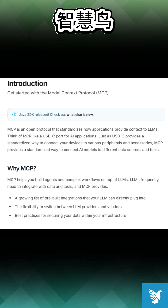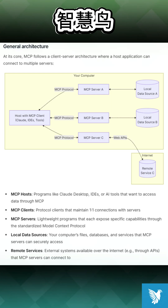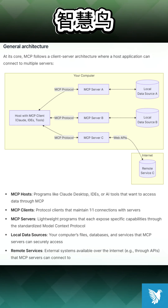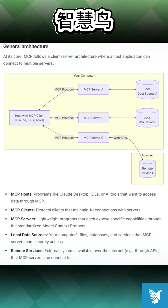When comparing MCP to a traditional function call, its value lies in the ability to avoid reinventing the wheel, particularly for tasks like data scraping or SQL execution, which may have already been solved by others. Additionally, MCP's microservice-based structure offers cross-language and cross-environment compatibility, a feature that function calls lack.